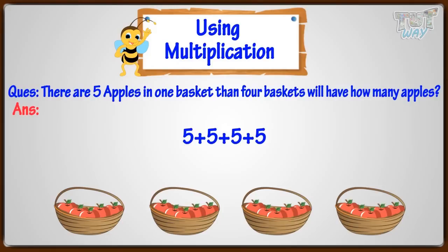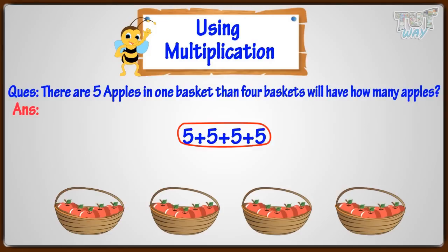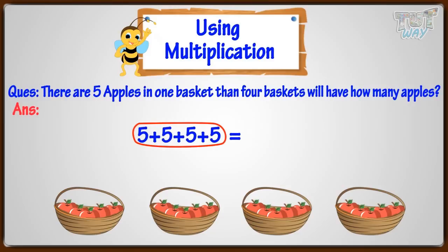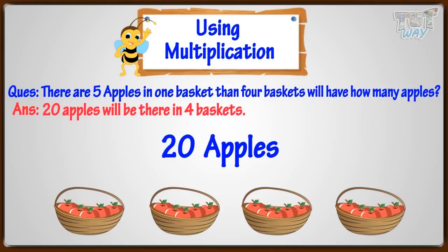You can write repeated addition in the form of a multiplication sentence. So, five plus five plus five plus five can be written as five times four. And we can easily solve it, as five multiplied by four equals twenty. So, twenty apples will be there in four baskets.